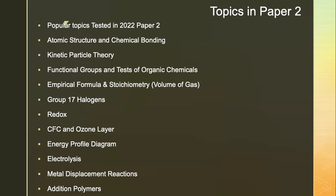Based on what happened last year, I predicted chemical bonding to be tested — I predicted dot-and-cross, and they did test that, but students were not required to draw; they had to infer. I predicted correctly for kinetic particle theory. Organic chemistry was a big miss for me. Heat was also something I didn't really predict — I thought it was going to be something like greenhouse gas. Energy profile diagram I predicted correctly.